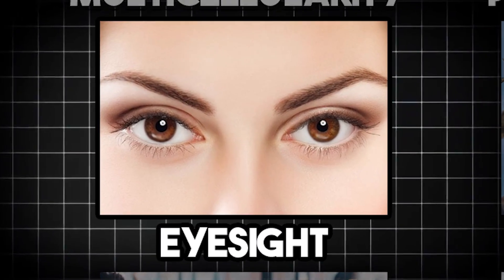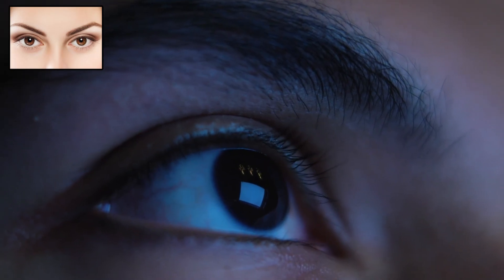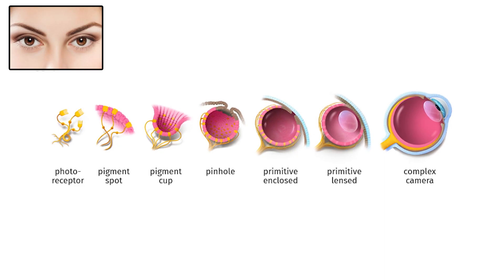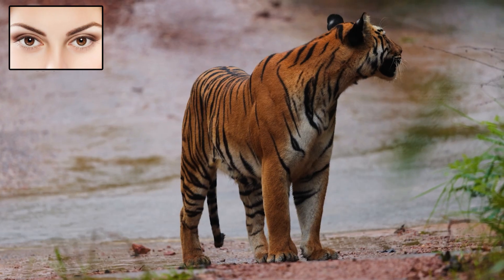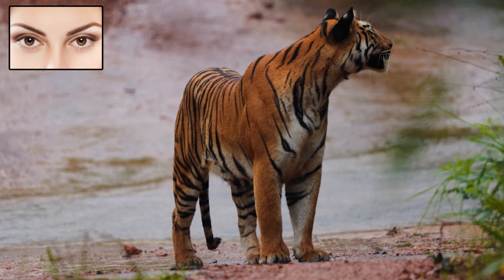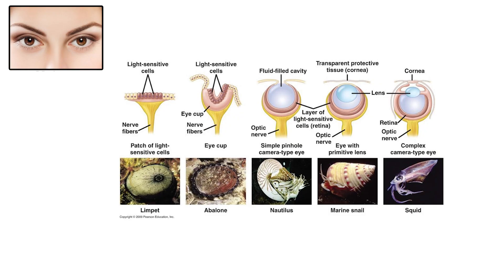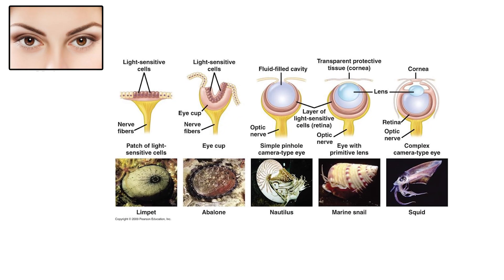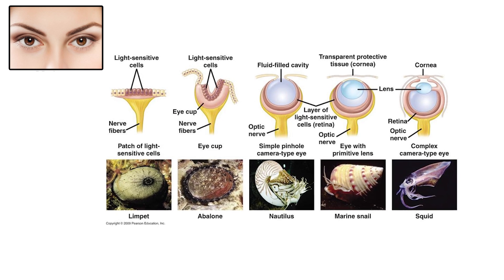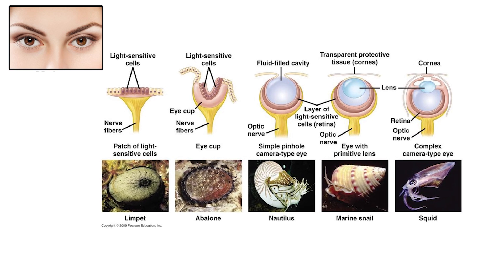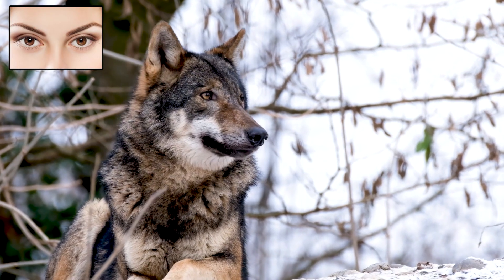Eyesight is the ability to detect and interpret light, allowing organisms to perceive the world around them. The evolution of eyes was one of the most impactful biological developments. With eyesight, animals gained the power to sense movement, identify predators or prey, and navigate their environment more effectively. The earliest eyes were simple, just light-sensitive cells grouped together on the skin. These primitive eye spots couldn't form images, but they could detect changes in light, helping early lifeforms distinguish day from night or sense the shadow of a nearby threat.